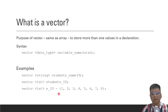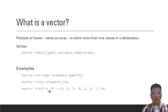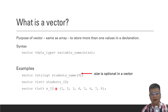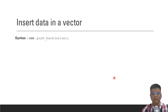Here is another example. We declare an integer vector called underscore ID, and we can insert values. These are predefined values for that particular vector variable. The size is optional in a vector.